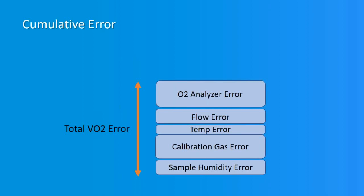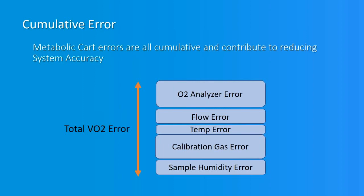To calculate cumulative error, first calculate the VO2 error contribution of each error source from the manufacturer's specifications over the likely testing range. Then the total VO2 error can be computed using the square root of the sum of the squares method for every contributor to VO2 error.